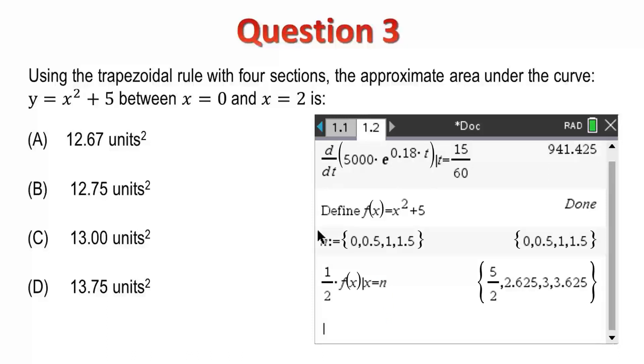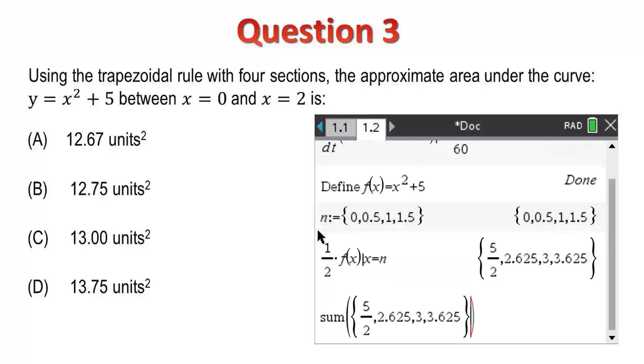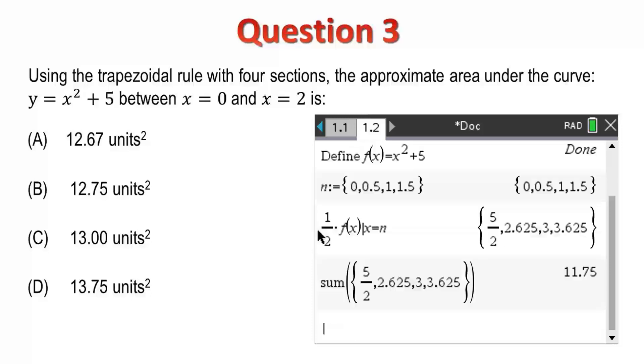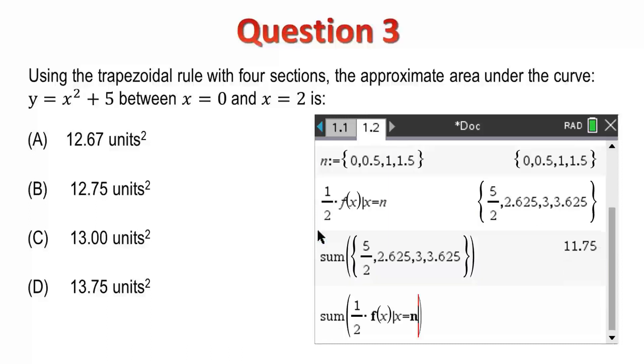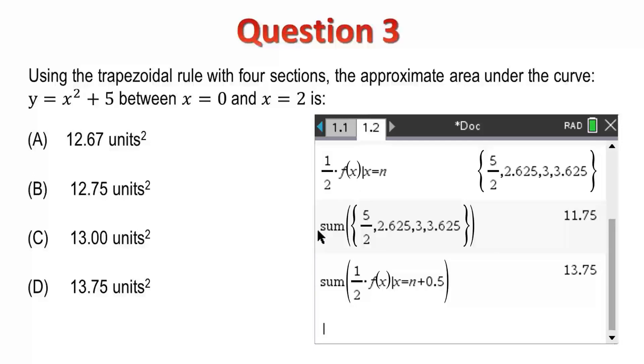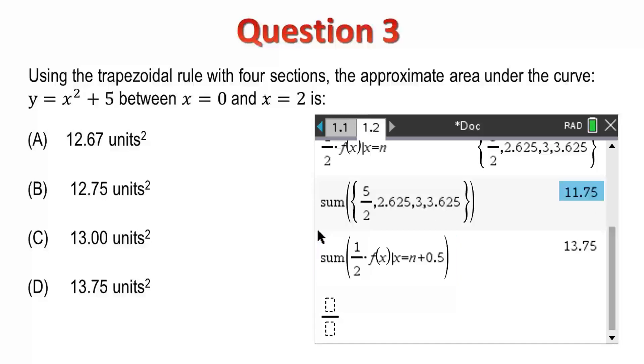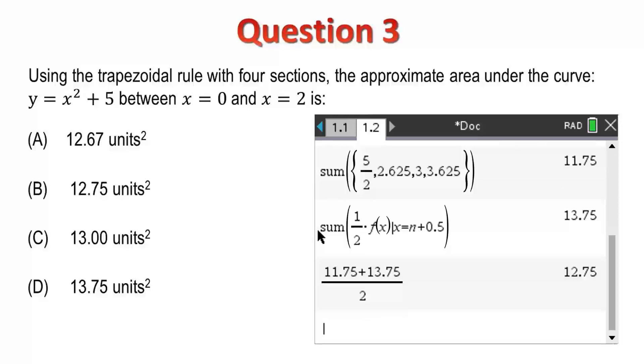Now let's find the sum of all of those areas. We can do both of these at once for the right-bound rectangles by simply using x equal to n plus a half. Then, just calculate the average of those two values. And there's our answer, 12.75. So, option B.